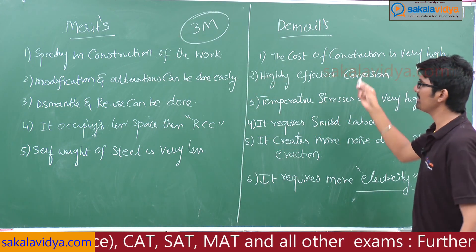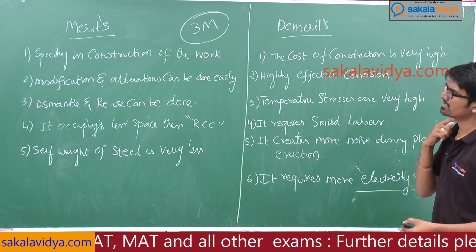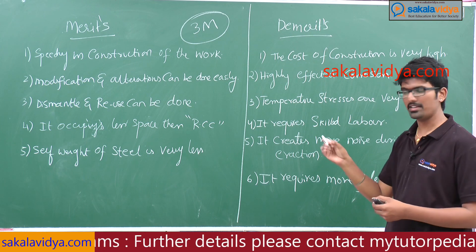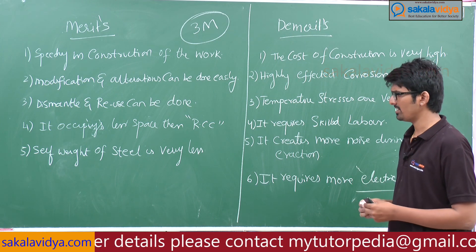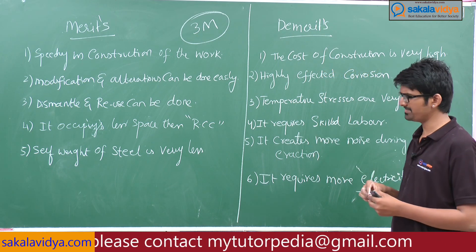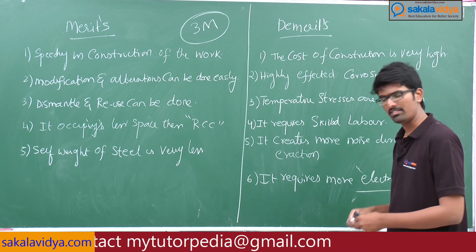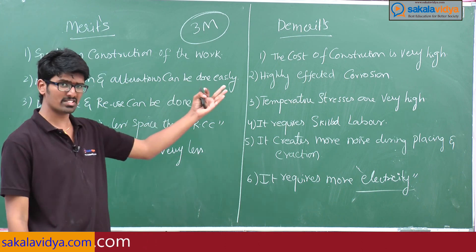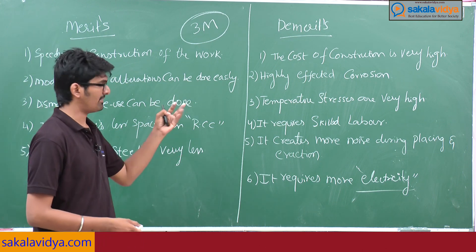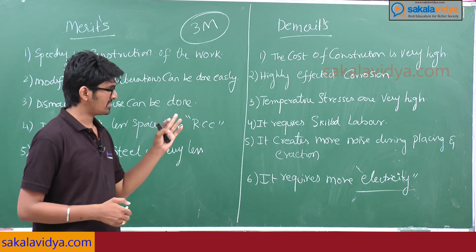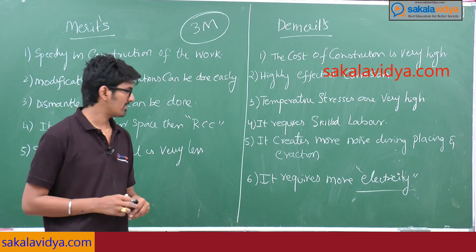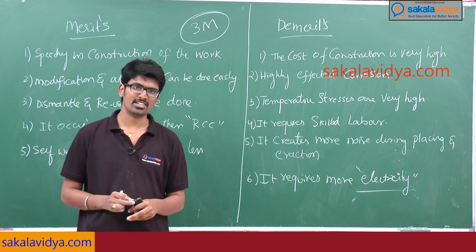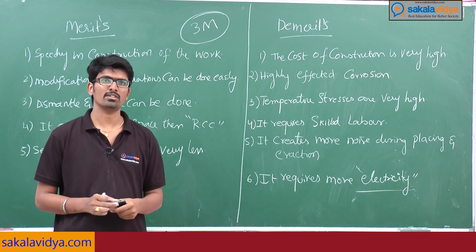So, to recap — merits: speed in construction of work, modifications and alterations can be done easily, dismantle and reuse of steel structures is possible, it occupies less space than RCC, and the self weight of steel is very low. Demerits: cost of construction is very high, highly affected by corrosion, temperature stresses are very high, it requires skilled labor, it creates more noise during placing and erection, and it requires more electricity.